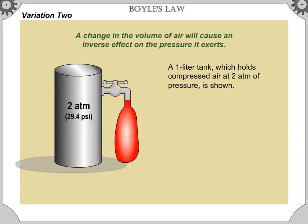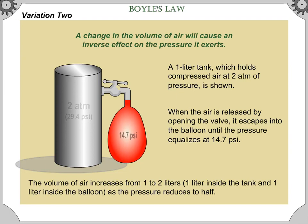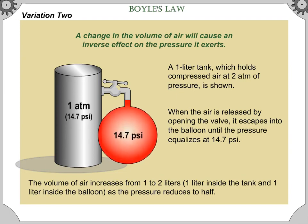A 1 liter tank, which holds compressed air at 2 atm of pressure, is shown. When the air is released by opening the valve, it escapes into the balloon until the pressure equalizes at 14.7 psi. The volume of air increases from 1 to 2 liters — 1 liter inside the tank and 1 liter inside the balloon — as the pressure reduces to half.